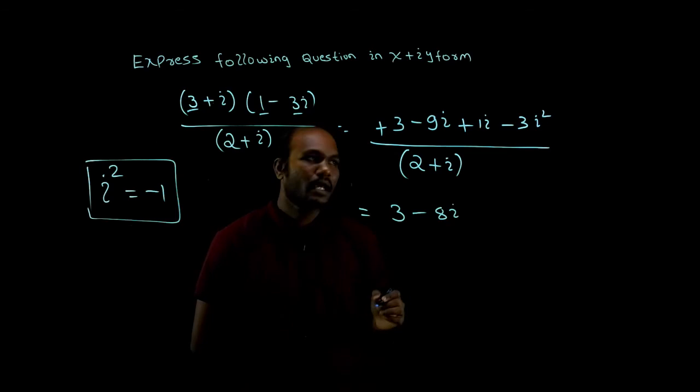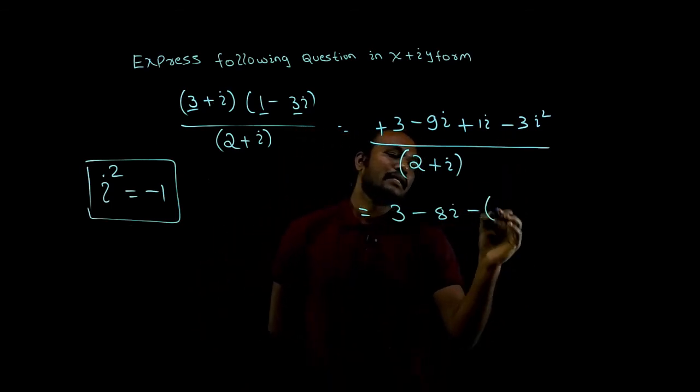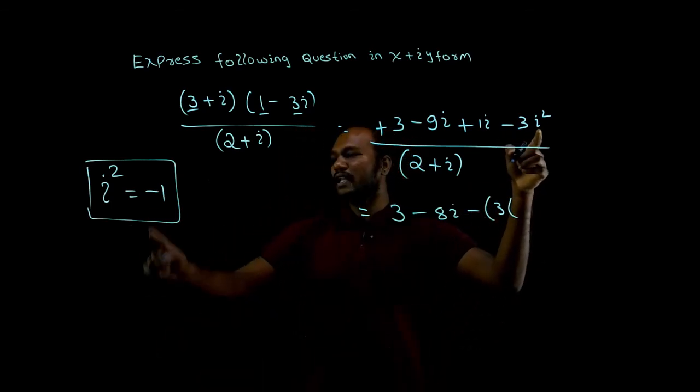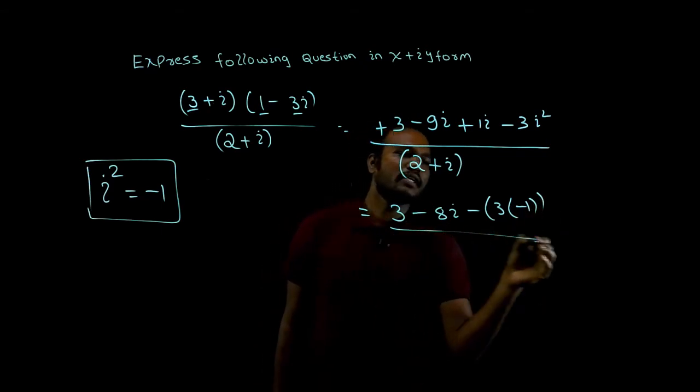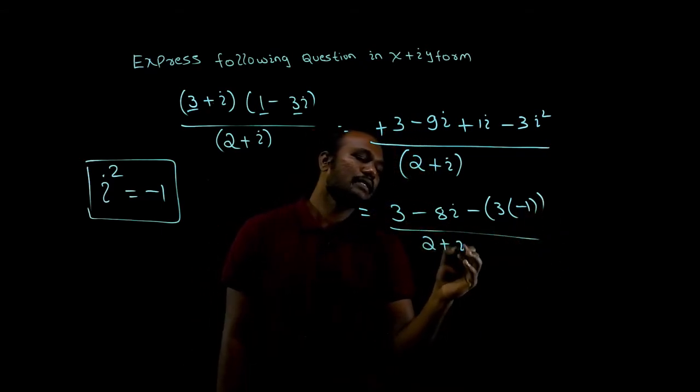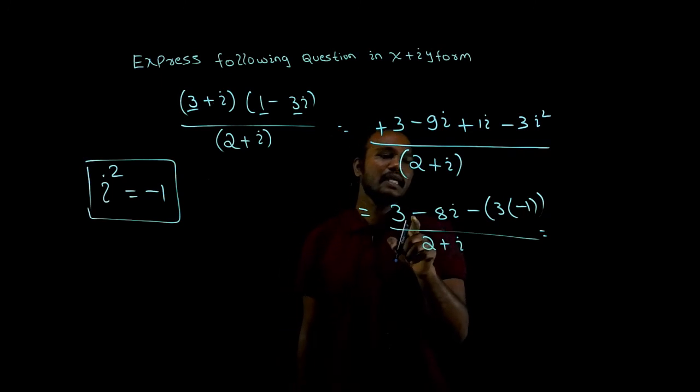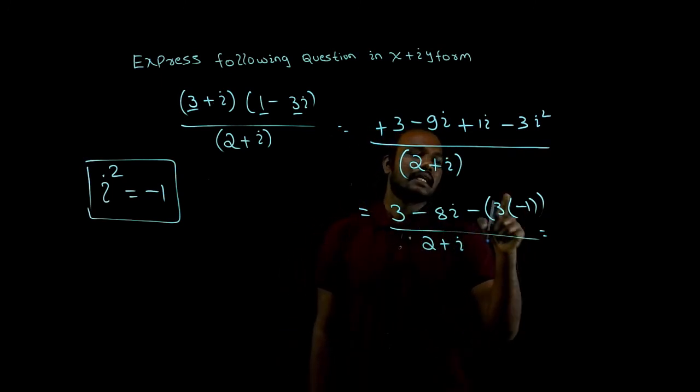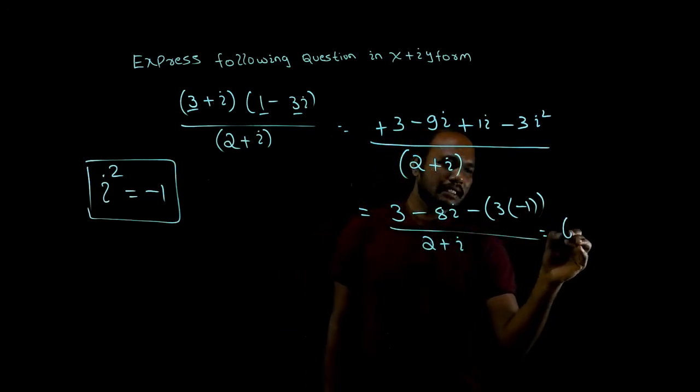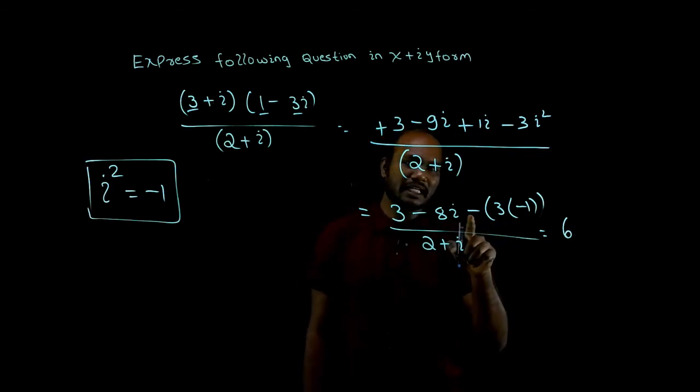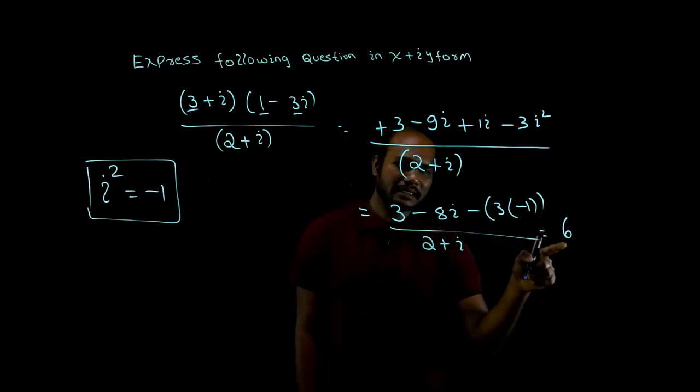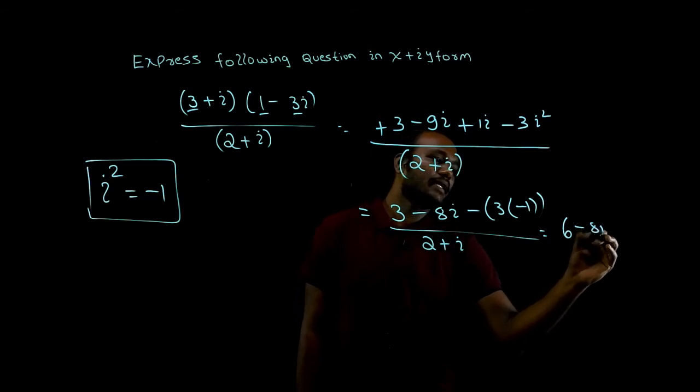Next, minus 3 times what is i square value? Minus 1. In the denominator as it is we have 2 plus i. So what did I get? 3 minus into minus is plus 3, plus 3 is 6. So 3 plus 3 is 6 minus 8i.